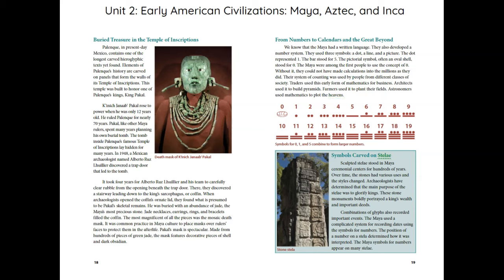Symbols Carved on Stele: Sculpted stele stood in Maya ceremonial centers for hundreds of years. Over time, the stones had various uses and the styles changed. Archaeologists have determined that the main purpose of the stele was to glorify kings. These stone monuments boldly portrayed a king's wealth and important deeds. Combinations of glyphs also recorded important events. The Maya used a complicated system for recording dates using the symbols for numbers. The position of a number on a stele determined how it was interpreted.